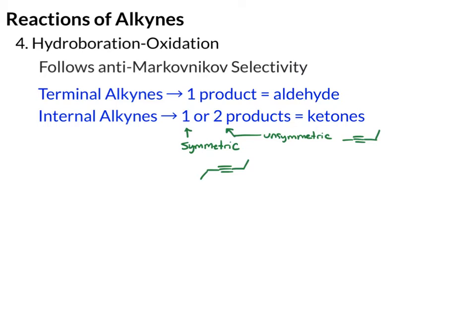Remember from our discussion of alkenes that the hydroboration-oxidation is a two-step procedure. In step one, we'll add BH3, which may be written as a THF complex. In step two, we'll add NaOH and H2O2 to oxidize the boron to an OH group.